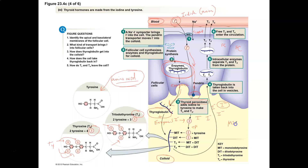Thyroid peroxidase — I'll just put TP here — is not only helping us to produce the iodine, but it's also helping us to attach the iodine to the tyrosine. When you have one iodine attached to a tyrosine, you produce a molecule called MIT — mono-iodotyrosine, mono meaning one. If you take an MIT and add another iodine to it, you get a molecule called DIT, meaning two iodines attached.